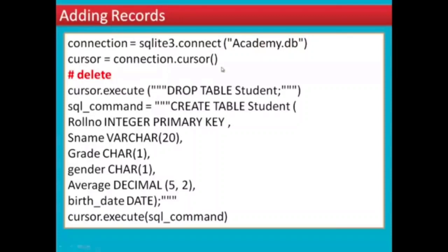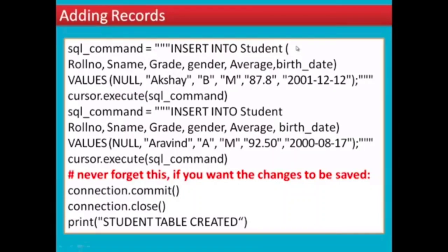The table fields include: roll number, student name, grade, gender, average, and date of birth. We created the student table in SQLite3. Now we can also type the state of the student in SQLite3. Once we create the table, please keep the records ready.